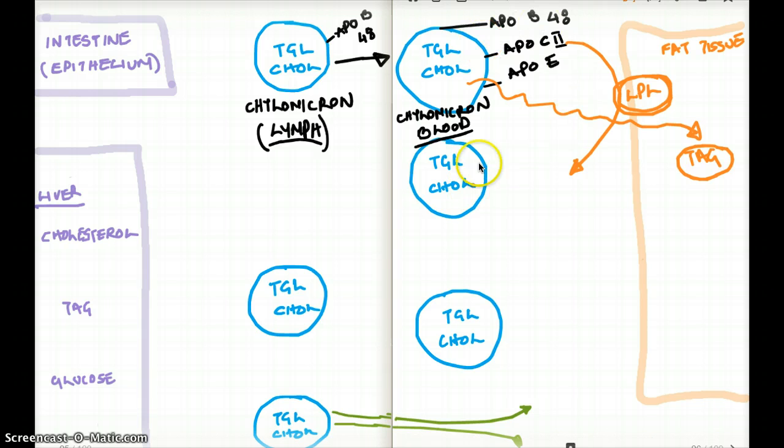So as soon as it moves on, it's going to lose this ApoC2 because that ApoC2 was used to activate this lipoprotein lipase to dump some of the fat. So the chylomicron that we are going to see here now, which is the remnant chylomicron, is going to have ApoB48 because that is how we recognize that something is chylomicron, and it's going to have ApoE. It's not going to have ApoC2 anymore because ApoC2 was already used to activate this lipoprotein lipase.